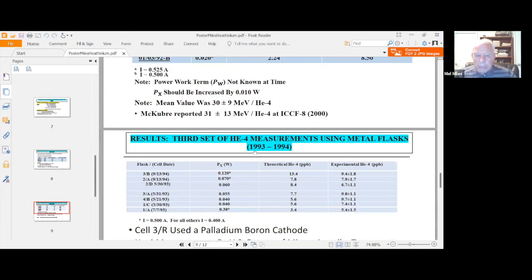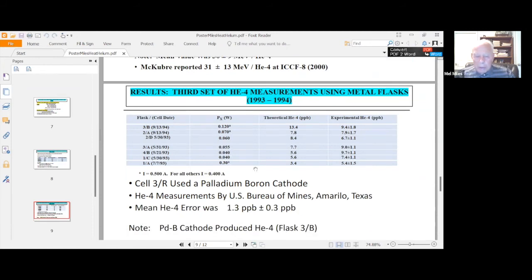A third set of helium-4, we finally had funding to do this in 1993-94. We made metal flasks, we sent the samples off into another laboratory in Amarillo, Texas Bureau of Mines, U.S. Bureau of Mines. Their error that reported was 1.3, if you average these over here, 1.3 parts per billion was their errors on their measurements. The average is 1.3 parts per billion.